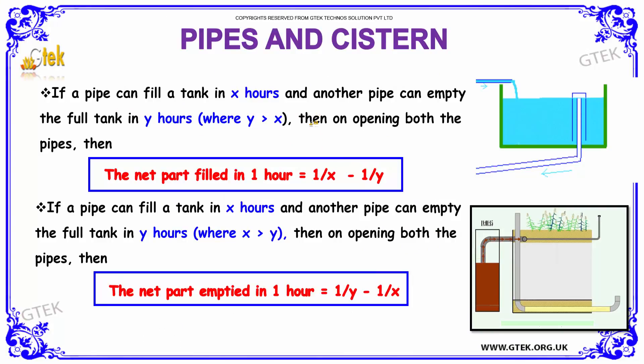If a pipe can fill a tank in x hours and another pipe can empty the tank in y hours where y is greater than x, then on opening both pipes the net part filled in one hour will be 1/x minus 1/y. The difference between the time taken to fill the tank and empty the tank in one hour.